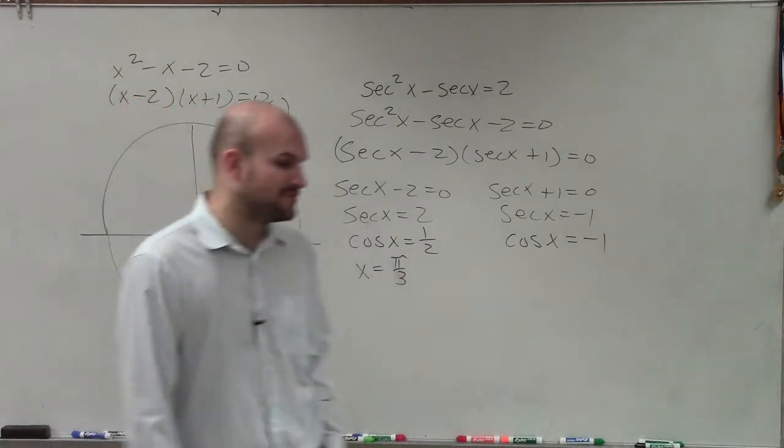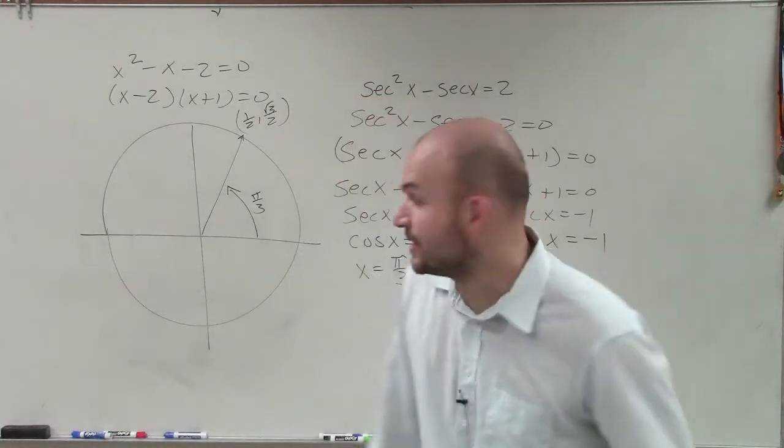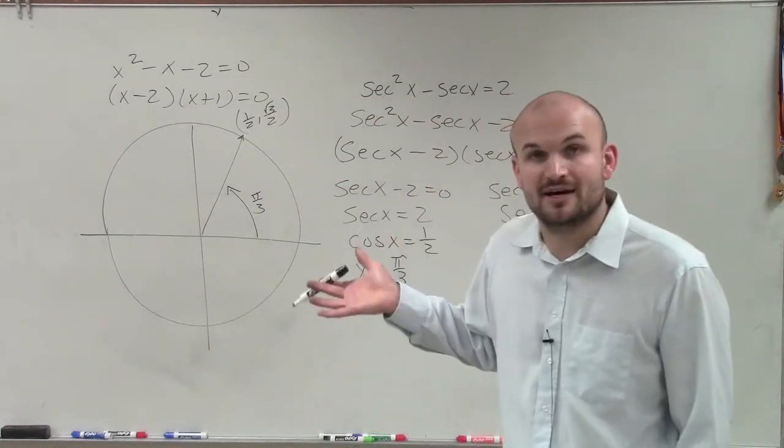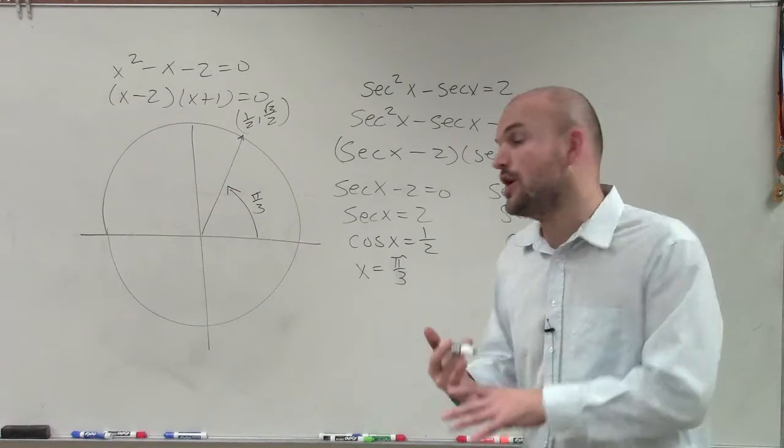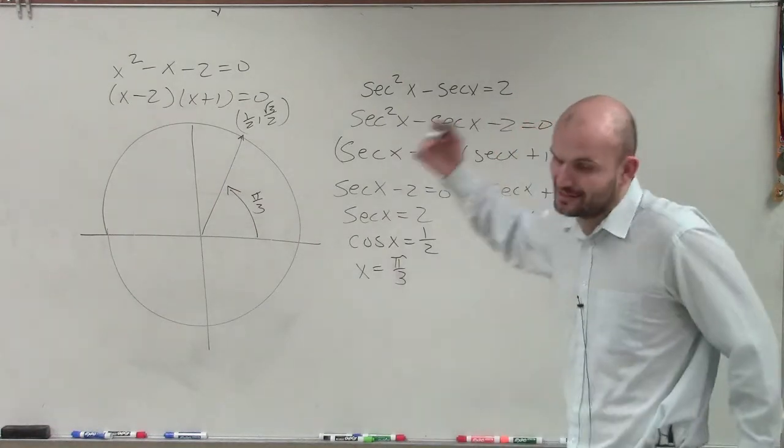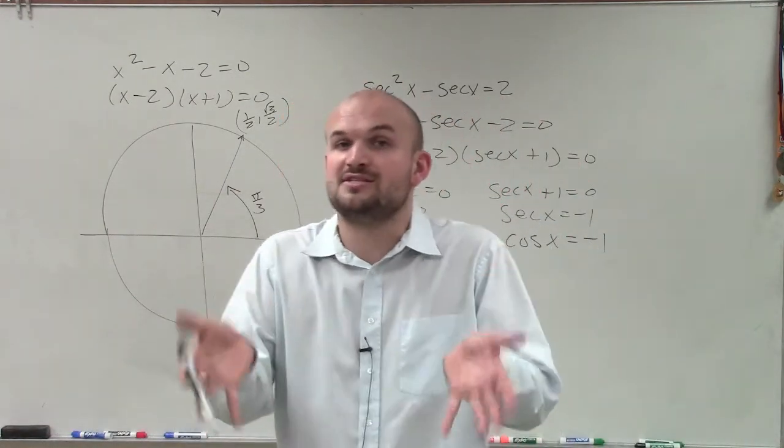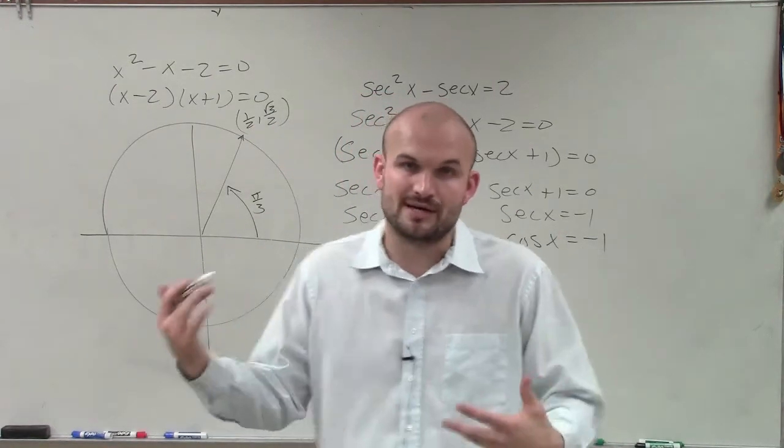But is that the only solution between 0 and 2 pi on my unit circle where the cosine, the x coordinate, is equal to 1 half? And the answer is no. Now, the solutions that we're working through is finding all the solutions. But I'm going to start with finding the solutions between 0 and 2 pi.